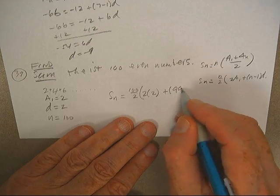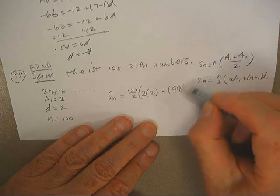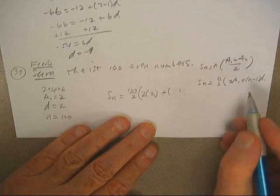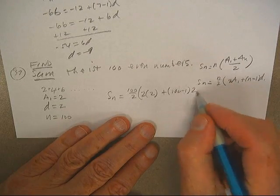plus ninety-nine D. Oops, ninety-nine minus—let's go ahead and write it all. Let's do a hundred minus one, and D is two.